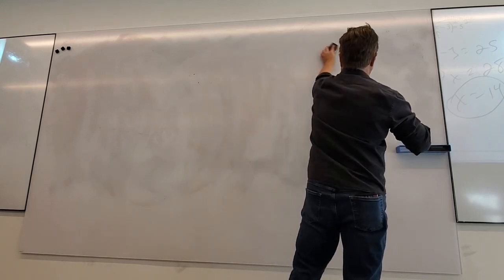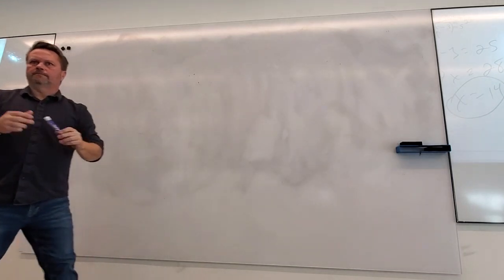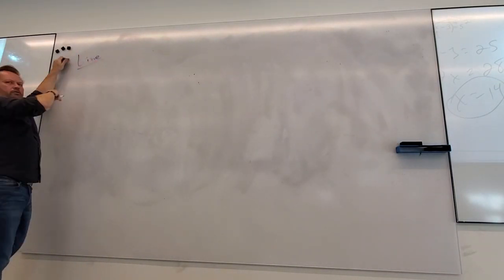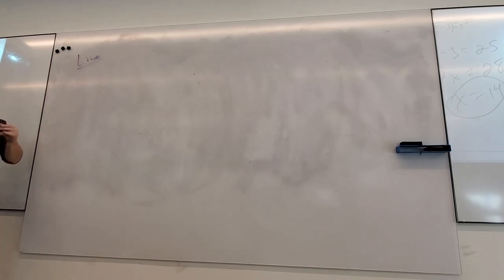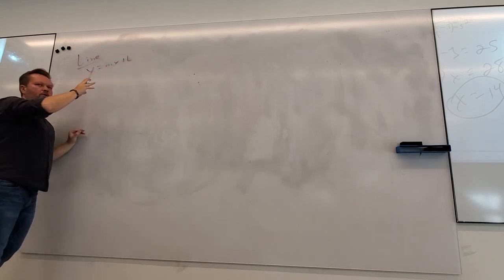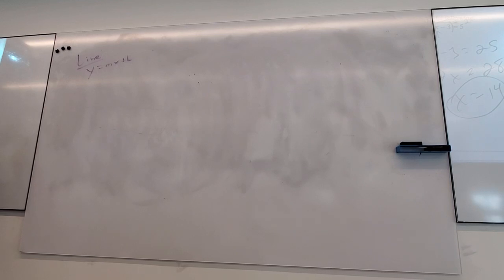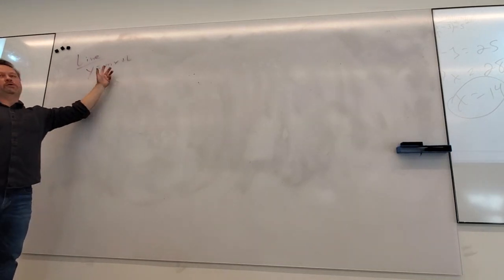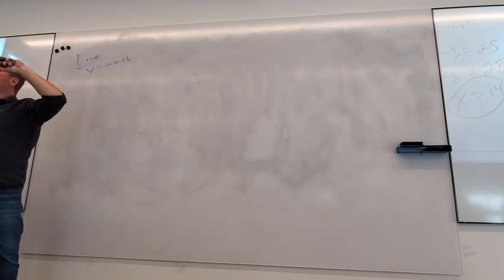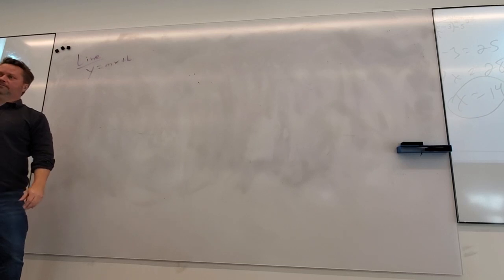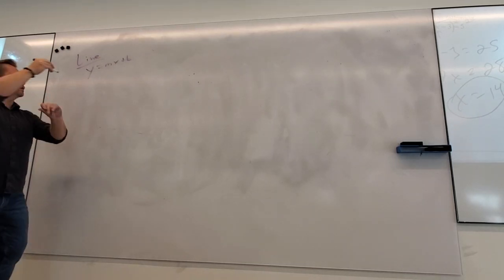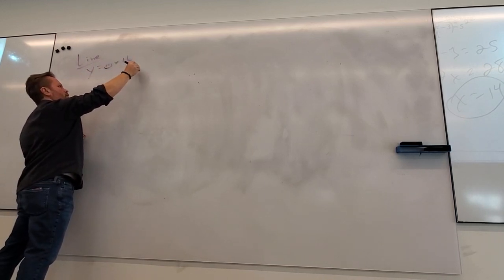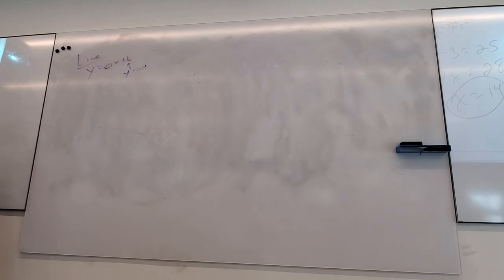Can anybody tell me the general equation of a line? y equals mx plus b — officially that's slope-intercept form, and it's the most useful form. Which piece is the slope? M. What's B? The y-intercept. Why is it the y-intercept? Because if you plug in x equals 0, you get y equals B.